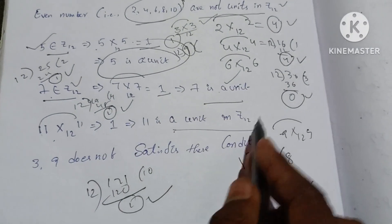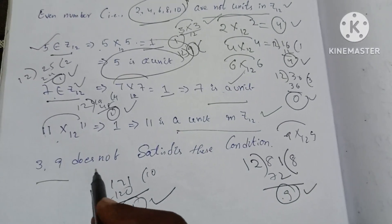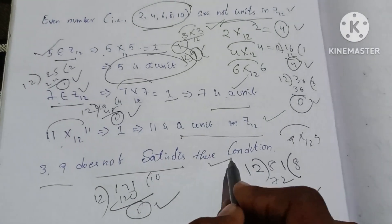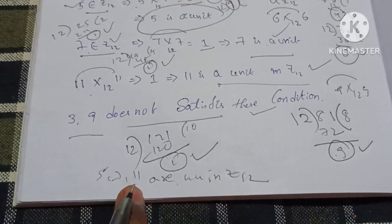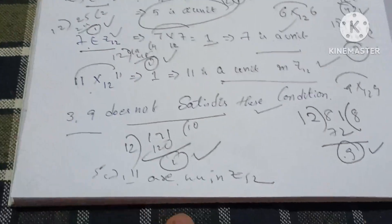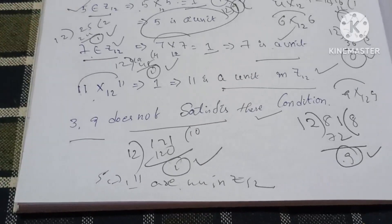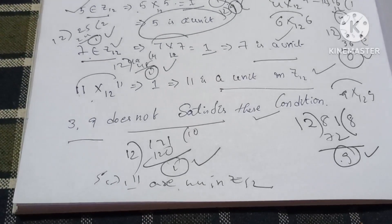So the units in Z₁₂ are 1, 5, 7, and 11. These are the units in Z₁₂. This is the solution.